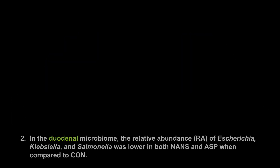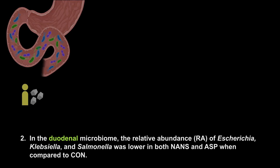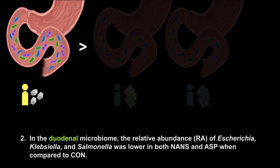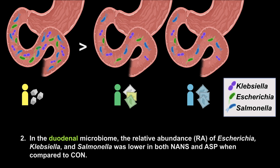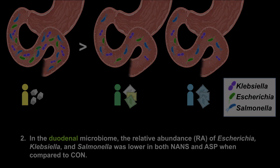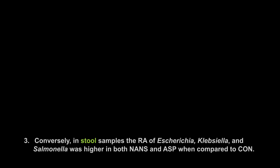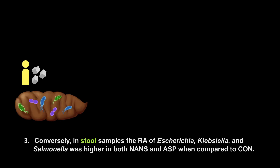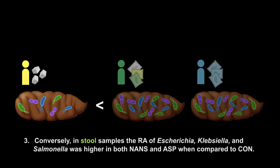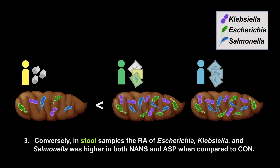In the duodenal microbiome, the relative abundance of Escherichia, Klebsiella, and Salmonella was lower in both NANCE and ASP when compared to controls. Conversely, in stool samples, the relative abundance of Escherichia, Klebsiella, and Salmonella was higher in both NANCE and ASP when compared to controls.